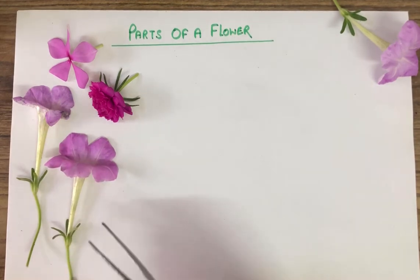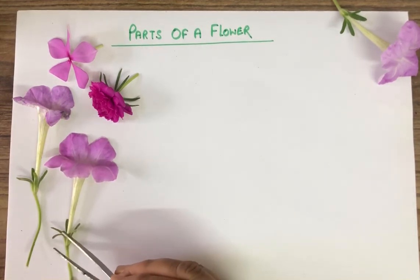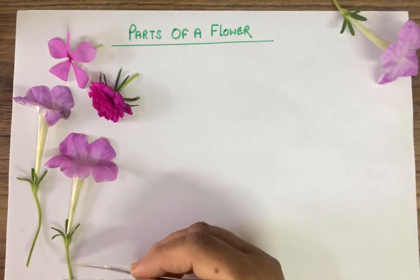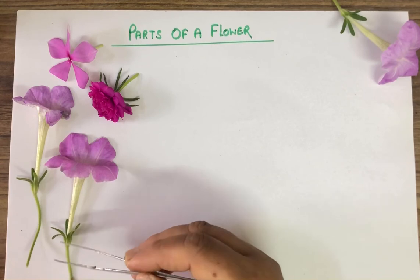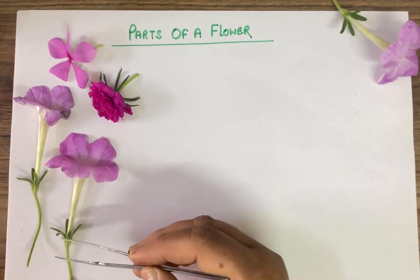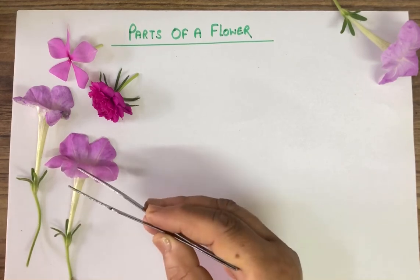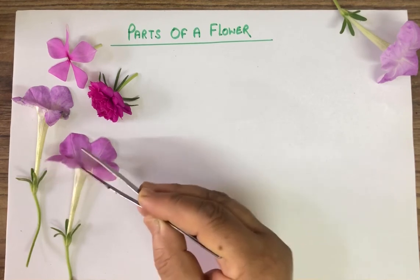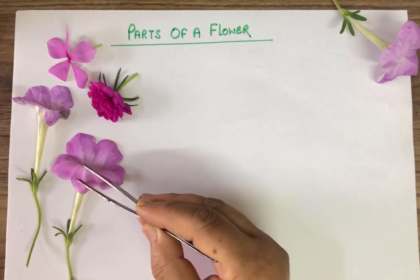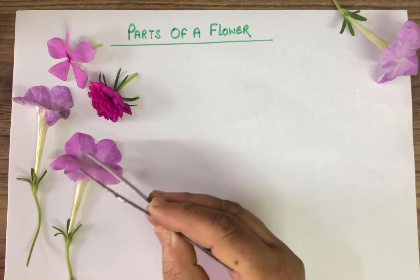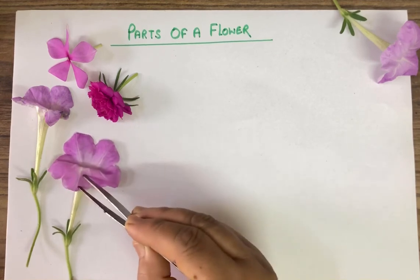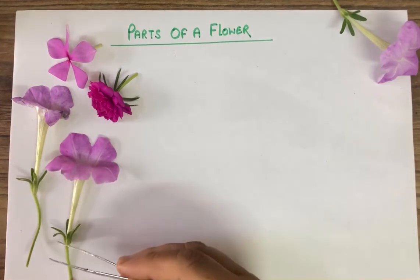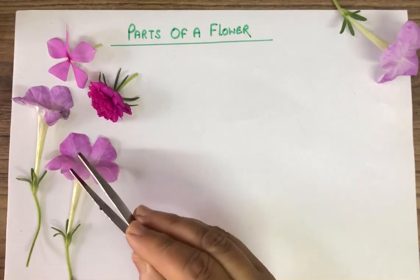There are one, two, three, four, five sepals. The separate number of sepals may vary. The first part is pedicel, second is sepals, and the third part is petals. These are petals — there are one, two, three, four, and five. The number of petals can differ.